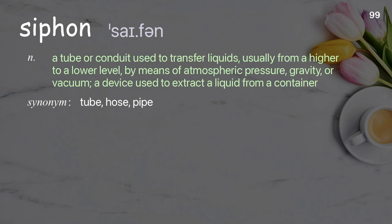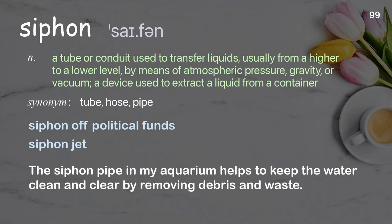Siphon: a tube or conduit used to transfer liquids, usually from a higher to a lower level, by means of atmospheric pressure, gravity, or vacuum; a device used to extract a liquid from a container. Examples: siphon off political funds; siphon jet. The siphon pipe in my aquarium helps to keep the water clean and clear by removing debris and waste.